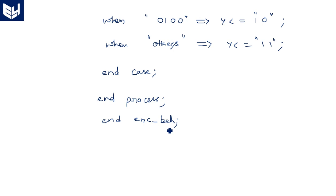This is the code for the behavioral model of the 4x2 encoder, and we have seen the data flow model also in two different styles.